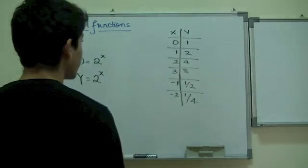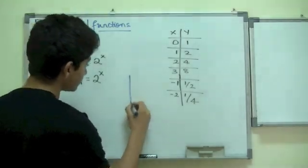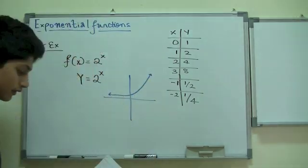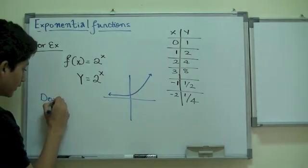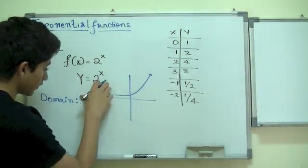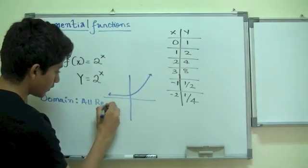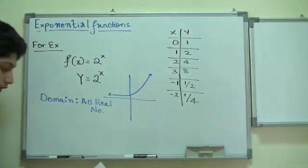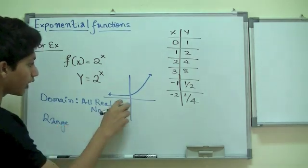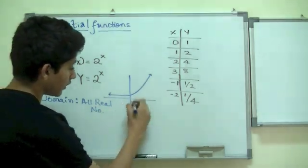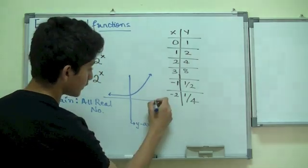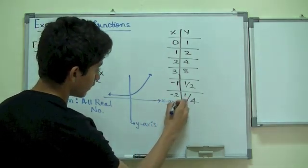The graph should go like this. It should be continuously increasing. The domain we stated in this function is all real numbers. Now, the range is all positive numbers because nobody goes over here. This is y-axis and it's called the range. This is called x-axis, which is called domain.